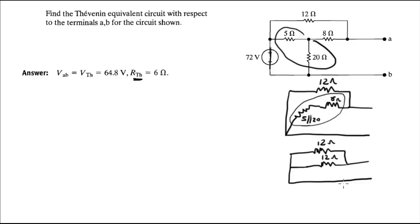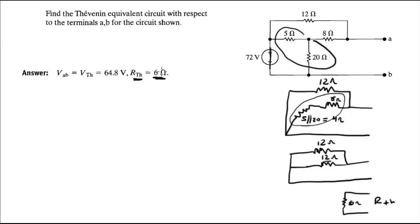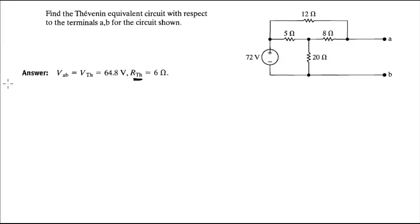The 5-ohm in parallel with 20-ohm gives 4 ohms. The 4 ohms in series with the 8-ohm gives 12 ohms. Then 12 in parallel with 12 gives 6 ohms. So R_Thevenin equals 6 ohms.